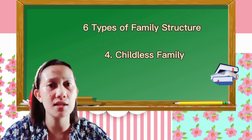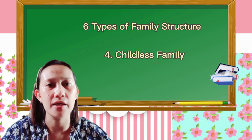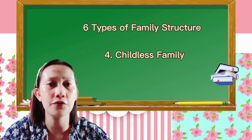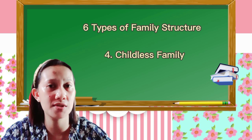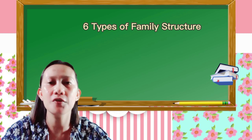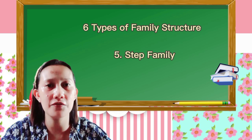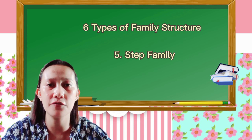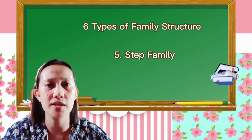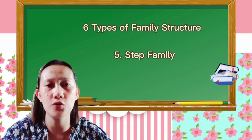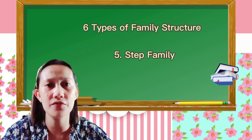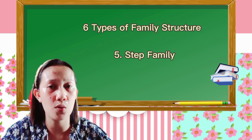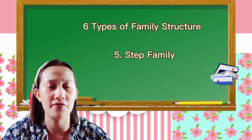Fourth is the childless family — it consists of two parents living and working together with no children. Fifth is the stepfamily — it consists of a new husband, wife, or spouse and their children from previous marriages or relationships.